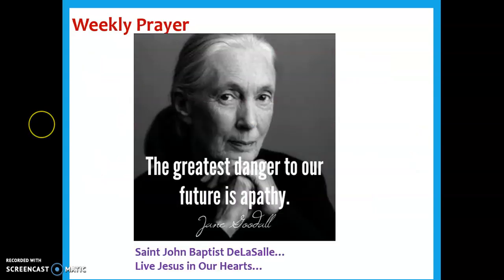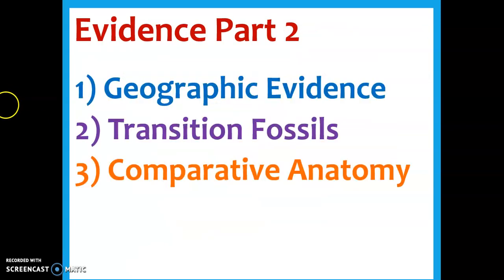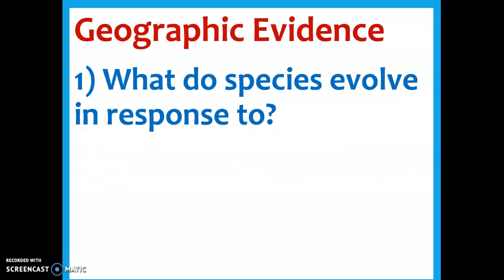So bell ringer, weekly prayer. Here's the first thing I want you to do: check out this video. You can go ahead and do that now or do it at the end. It's a good recap of last week since we haven't seen each other in a while. The title is 'What is the Theory of Evolution?' - it's its own assignment on Canvas, so you can pause this one and go knock out that one. But as we're moving on, this is part two: Evidence of Evolution - Geographic, Transitional Fossils, and Comparative Anatomy.